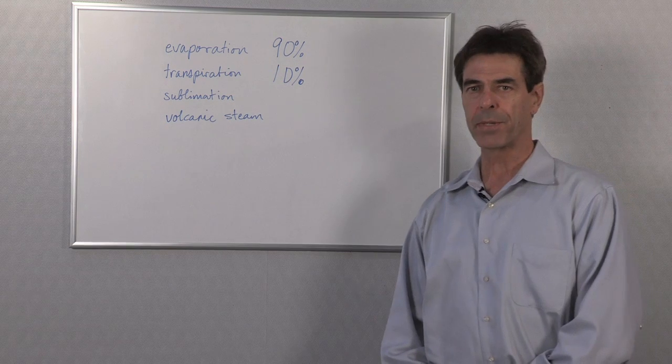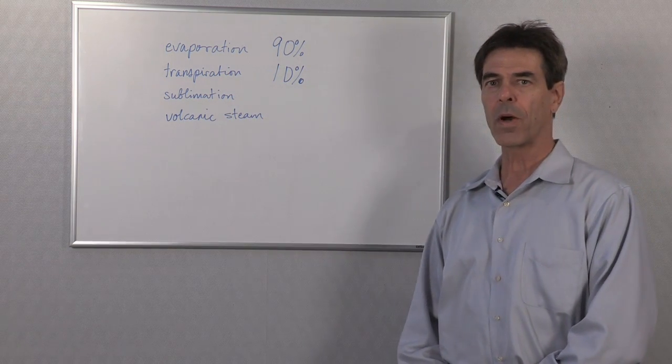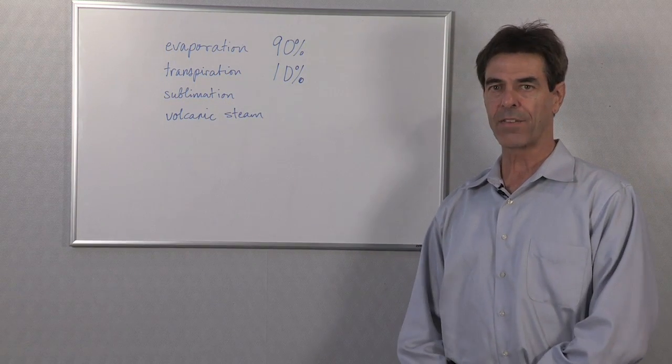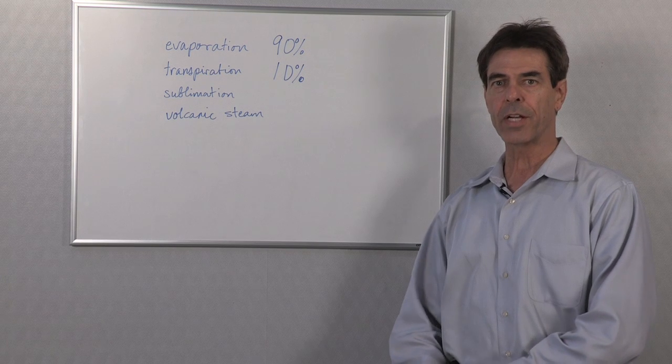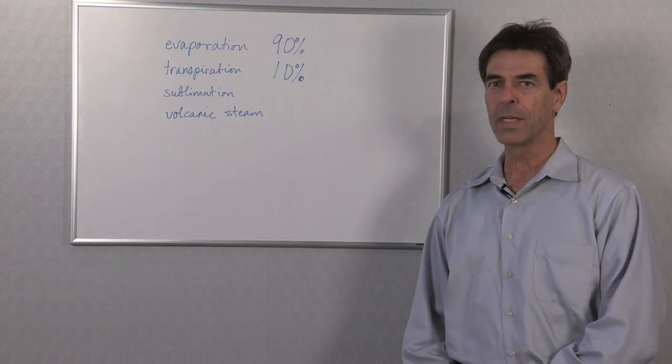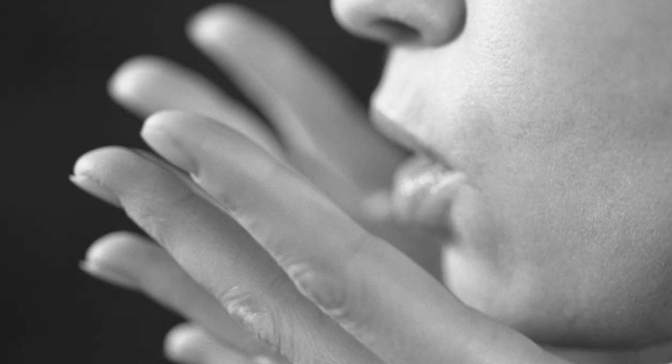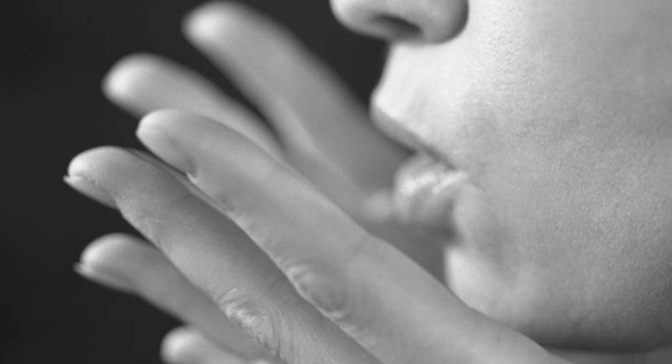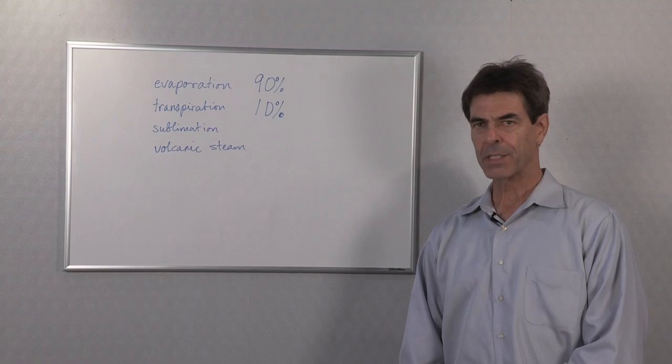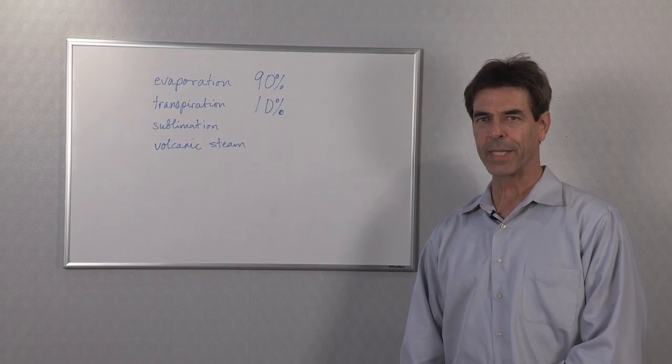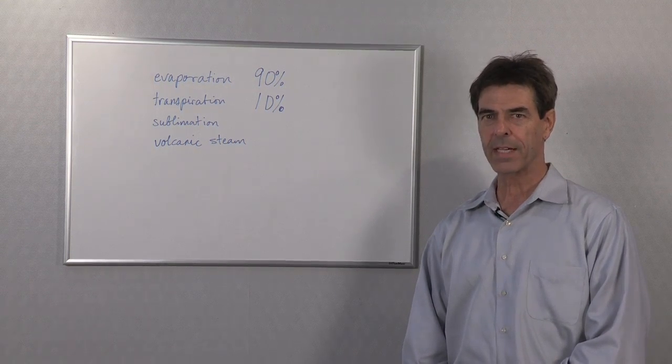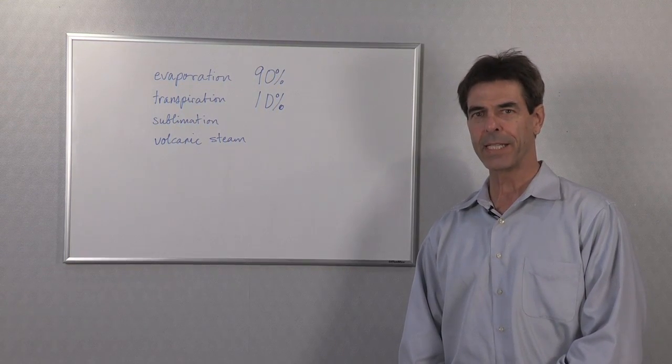10% comes from transpiration. This is the water that plants give off when they go through their chemical processes. Also, when I breathe, I contribute a little bit of water into the atmosphere. As a matter of fact, a large oak tree transpires about 40,000 gallons of water per year.